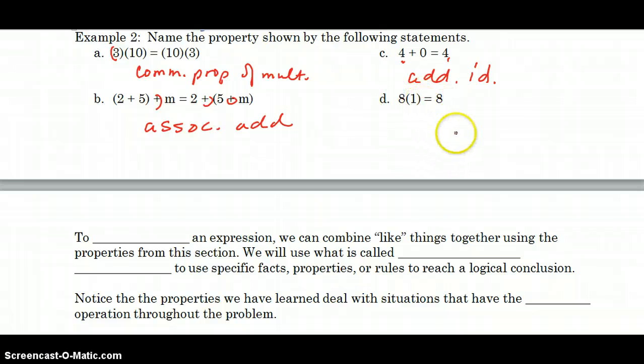Again, I have 8 on both sides, so that is a hint that it's an ID problem. And 8 is being multiplied. So it's the multiplicative identity.